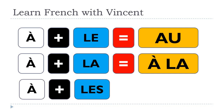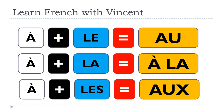When it comes to the plural form, À plus LES will also become AUX — a bit tricky like for the masculine. It's written A-U-X, with a final X that we don't pronounce, so it sounds like 'O'. We do pronounce the X as a Z sound when the next word starts with a vowel — that's the liaison. So: À + LE = AU, À + LA = À LA, À + LES = AUX.